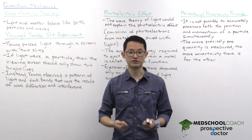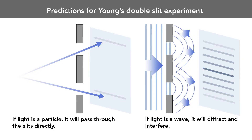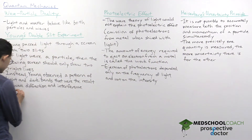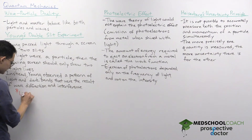As with all experiments, we can make predictions. If light were to act as a particle, you would predict that the light would just pass through the slits and form two bright lines on the viewing screen. However, Young did not observe that. Instead, what he saw on the viewing screen was a pattern of bright and dark bands, which were clearly the result of wave diffraction and interference. So this experiment showed that light exhibits wave behavior.